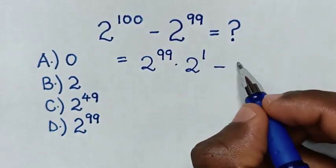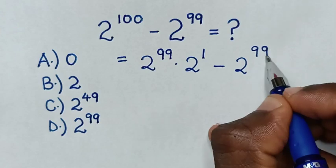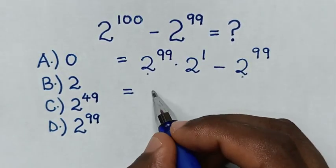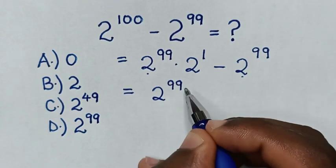Then minus 2^99. It will be equal to... in here, 2^99 is common, so we take 2^99 out of the bracket.